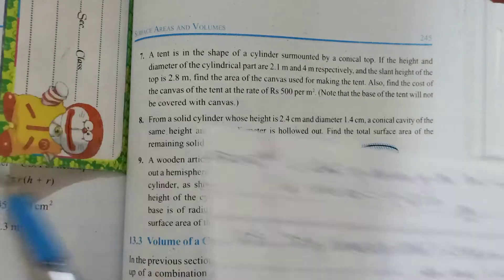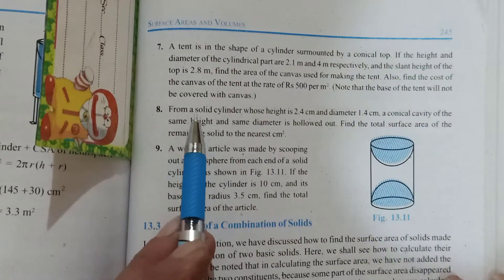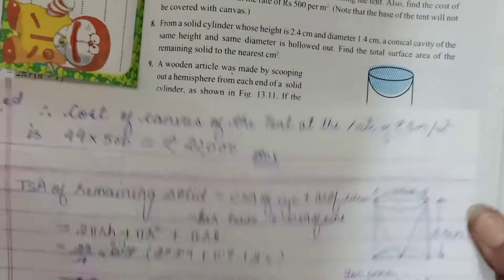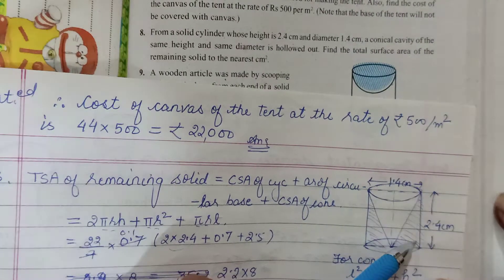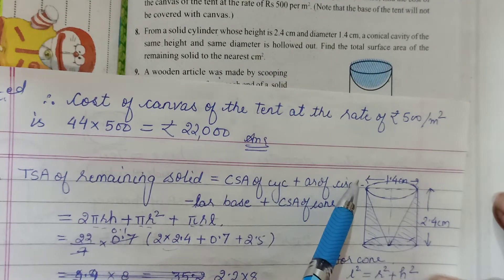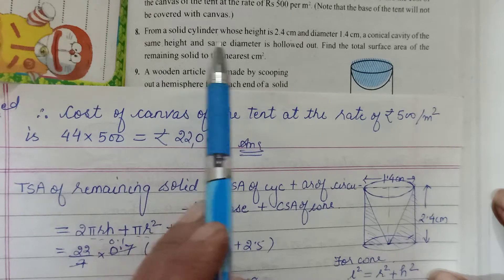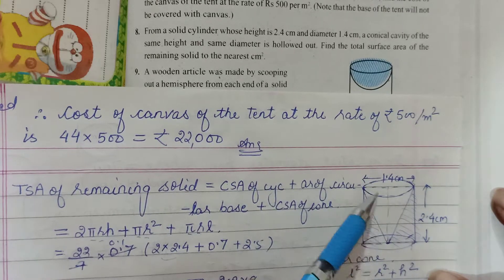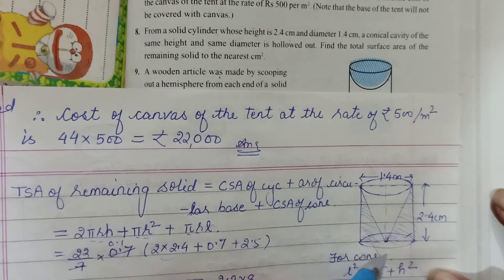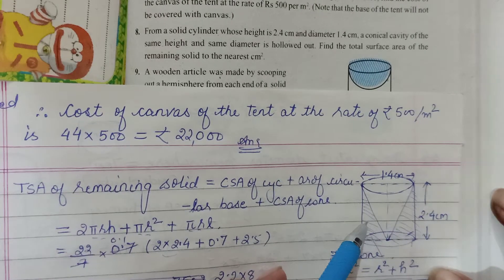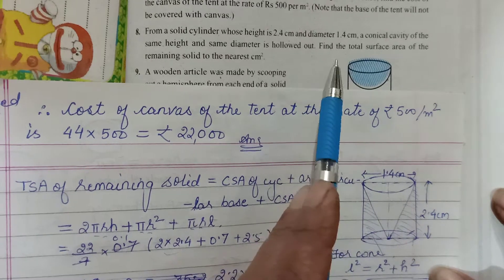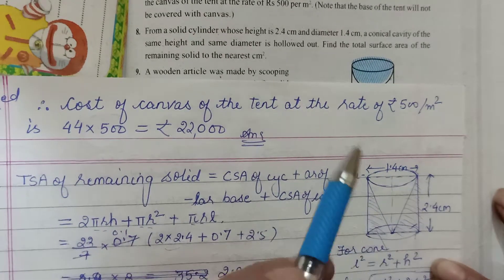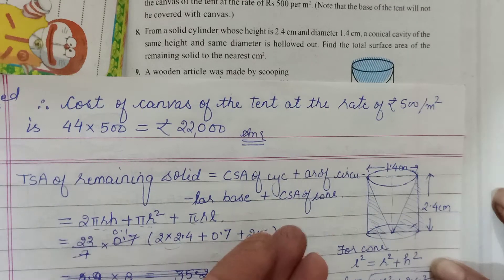Now the next one from solid cylinder, whose height is 2.4 - that's your figure there. So, cylinder of height 2.4 and diameter 1.4, a conical cavity of the same height and same diameter. Cavity means you have to find the total surface area of the remaining solid. So you have to find the total surface area. Surface area, I told in the very beginning children, is whatever is visible to you.